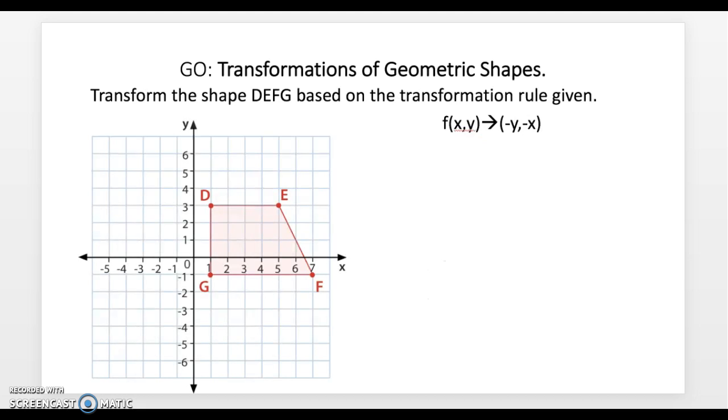Finally, in our go, we're going to be doing transformations of geometric shapes. So we're thinking back way to the beginning, first and second unit. We're given this shape D-E-F-G, and we're going to transform it based on this rule.